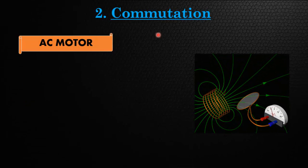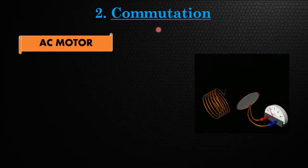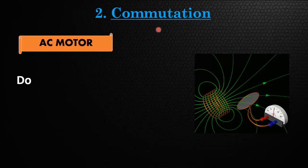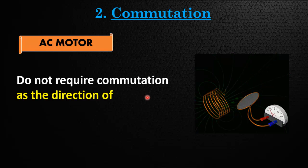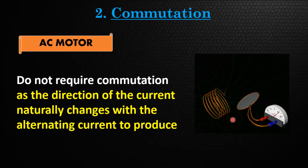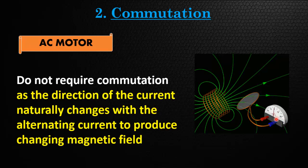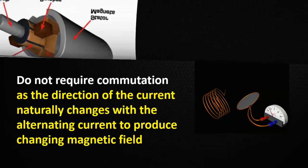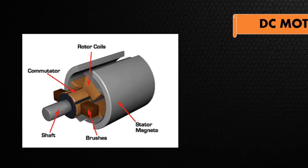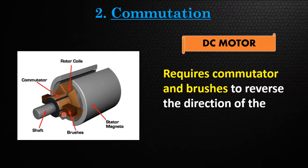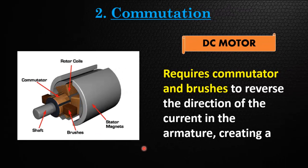Another difference is based on commutation, which is the process of reversing the direction of current in the windings. AC motors do not require commutation, as the direction of the current naturally changes with the alternating current. DC motors require a commutator and brushes to reverse the direction of the current in the armature, creating a rotating magnetic field.